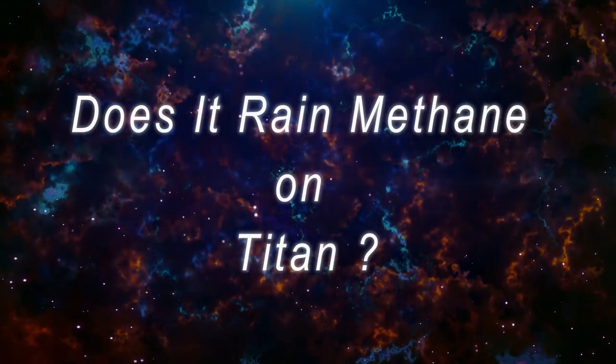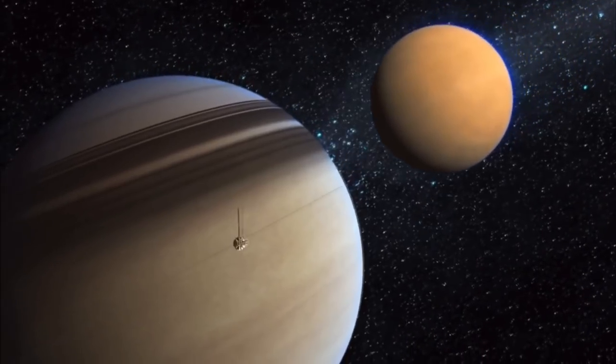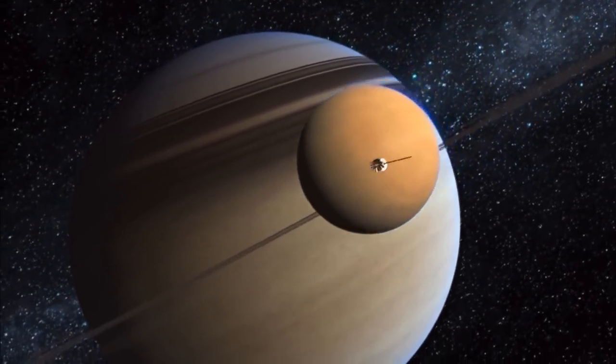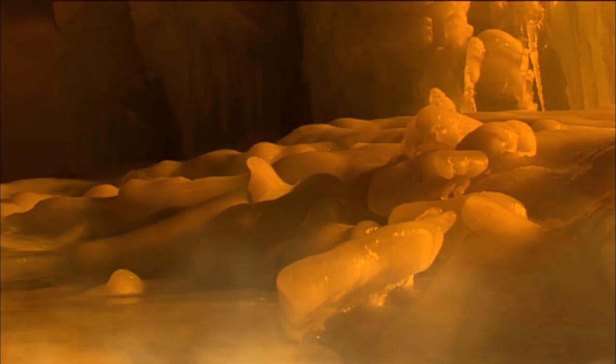Does it rain methane on Titan? Titan is the largest moon of Saturn. It is the only natural satellite known to have a dense atmosphere, and the only object other than Earth where clear evidence of stable bodies of surface liquid has been found.